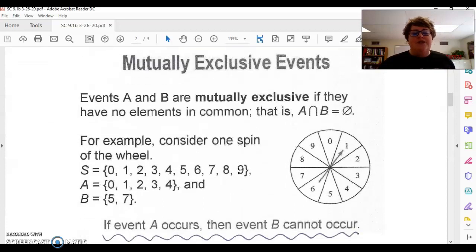Another term that we're going to use is mutually exclusive. So what it means to be mutually exclusive is that no elements are in common. So that means there's an empty set with the intersection of A and B. So if we look at this example, when we spin this spinner, consider one spin of the wheel. So your sample space is I can either get 0 to 9.